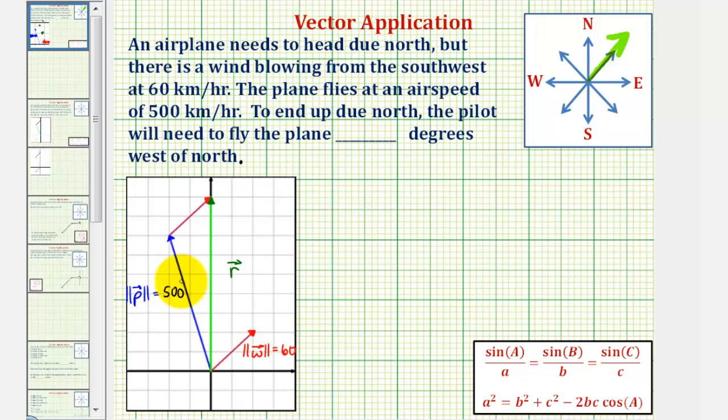So now geometrically, if we add vector p and vector w, we want the resultant vector to be this green vector. To add vectors p and w geometrically, we take the initial point of vector w and place it at the terminal point of vector p, as we see here. So this red vector is also vector w, which has a magnitude of 60.